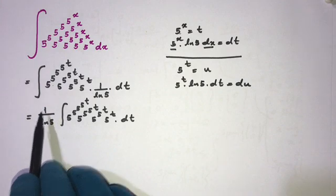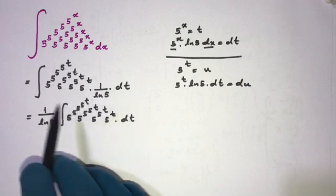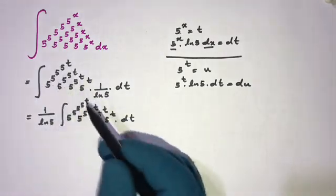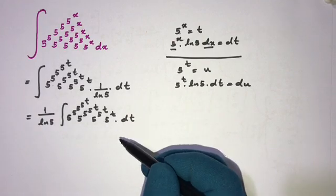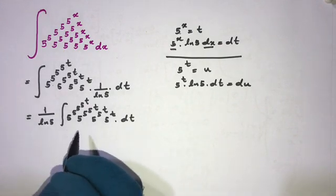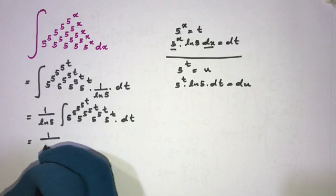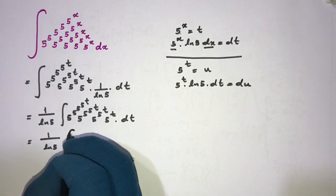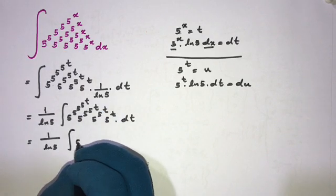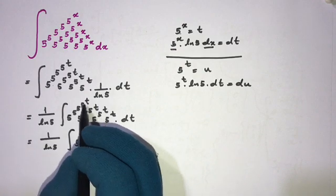I will solve this step by step. Plugging in the second substitution, we write (1 over ln 5) times the integral, with 5^t replaced by u. The term 5^t dt becomes du over ln 5, giving us a factor of (1 over ln 5) outside the integral sign.